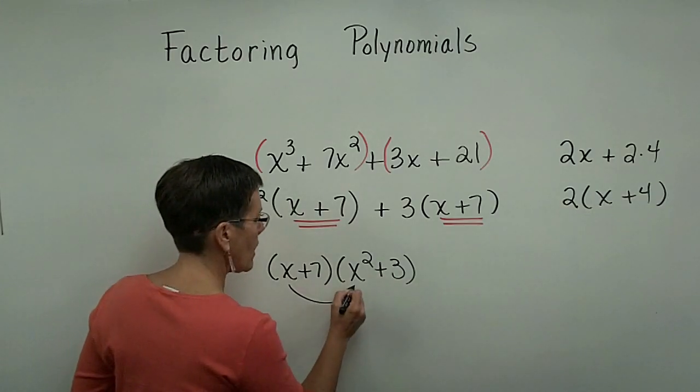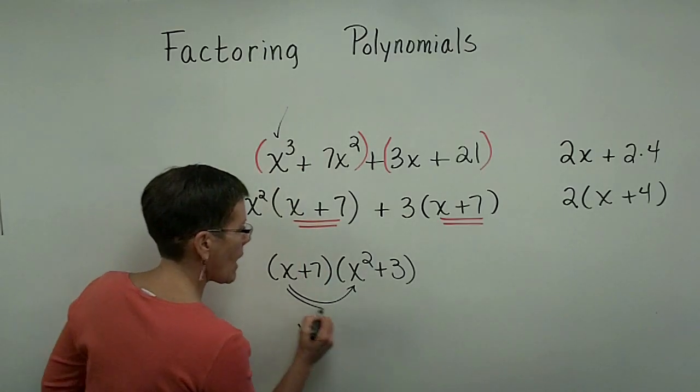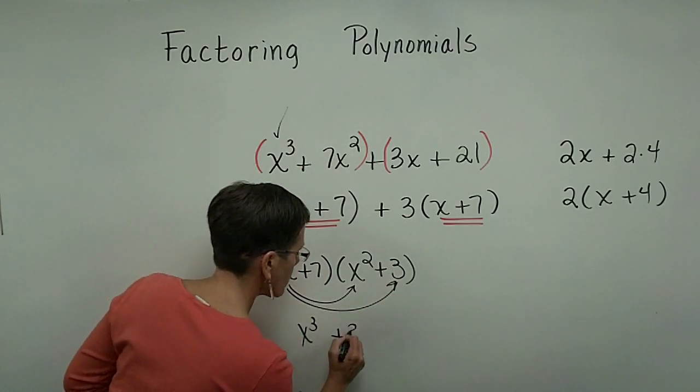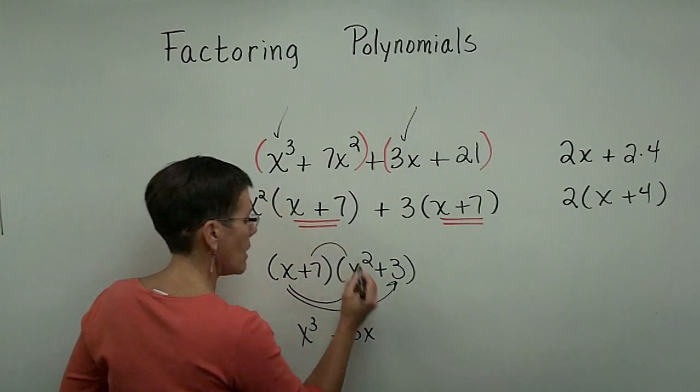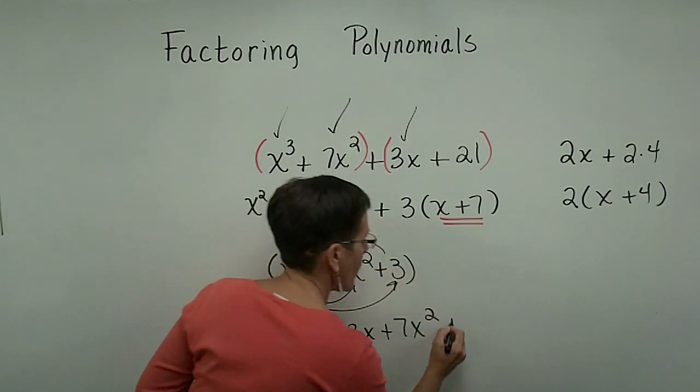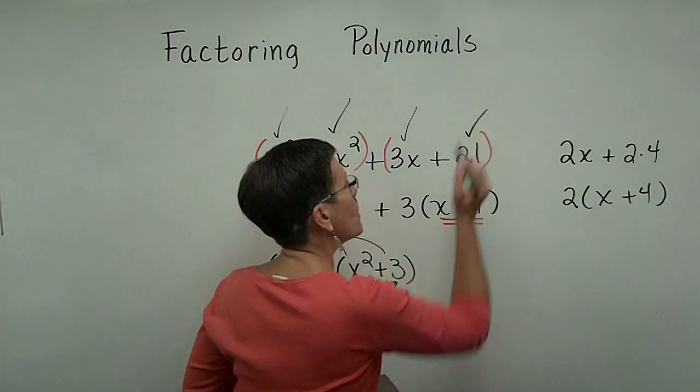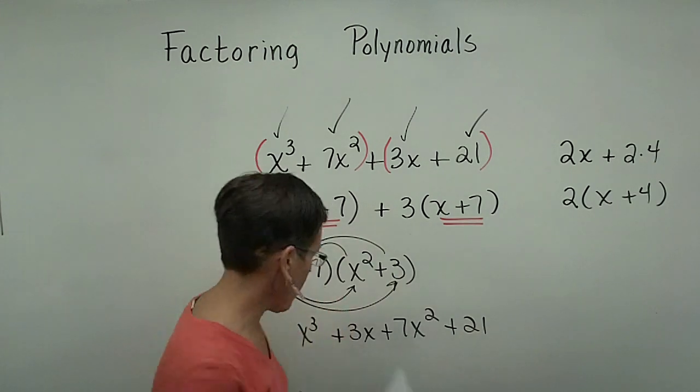We can check it by multiplying. So we have x times x squared is x cubed, that's this term. x times 3 is 3x, that's that term. 7 times x squared is 7x squared, that's this term. And 7 times 3 is 21. And we can be certain that we factored that problem correctly. Let's do another.